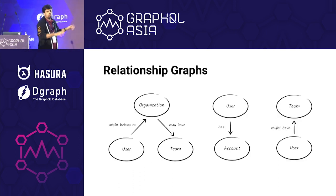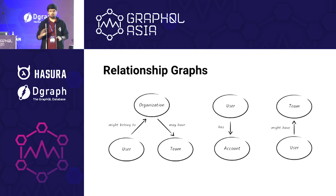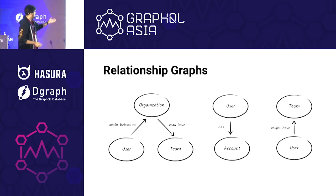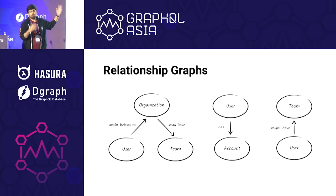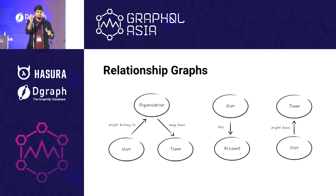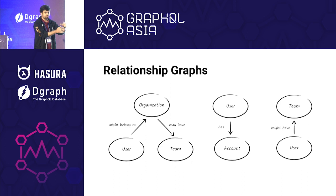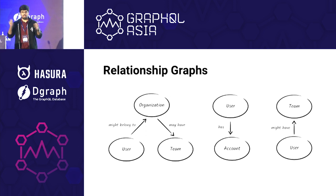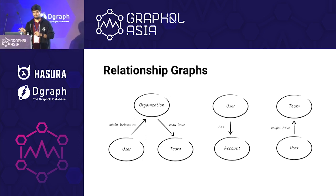No need to follow any flowchart rules. Just write down all the types you found and think of the relationships they may have. For example, a user might belong to an org, a team might again belong to an org, a user might have accounts, a user might also have teams. When you draw these connections, you are essentially thinking: I have my entities from your activities, and now I'm trying to draw relationships between them — and now you are inching close towards a GraphQL schema.